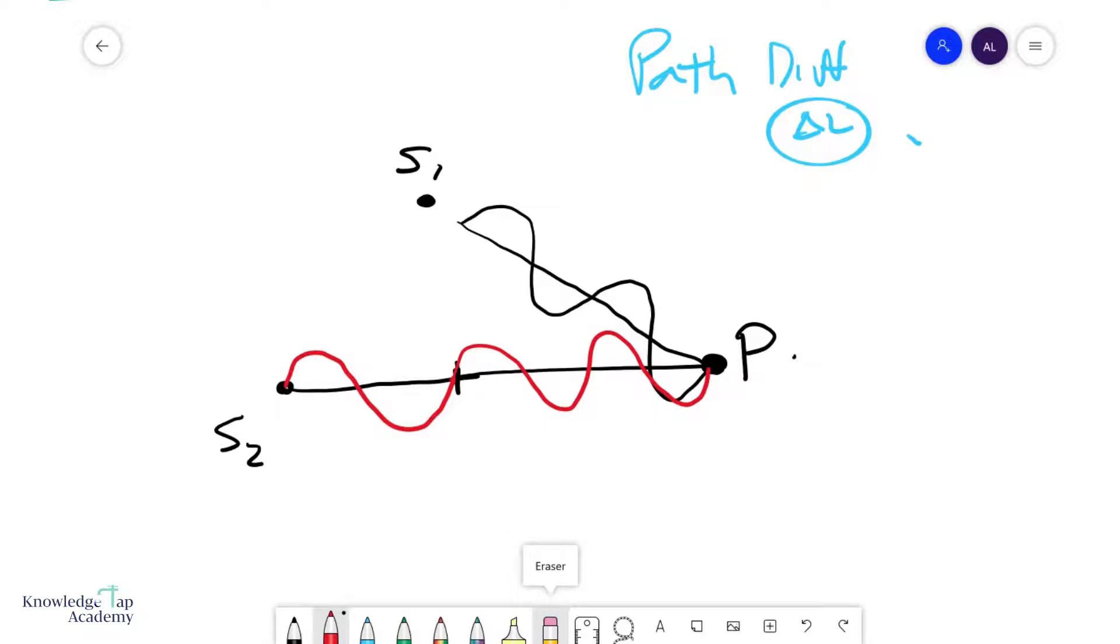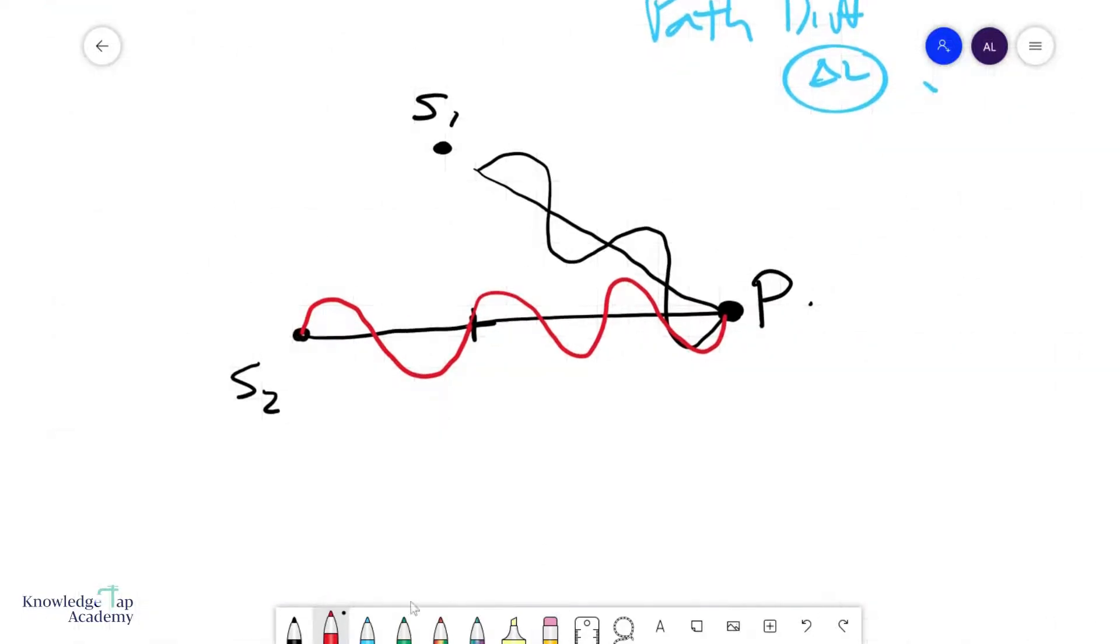Notice that every time I introduce a path difference equal to one wavelength, so I could just extend this even more, I'm basically introducing a phase difference of 2π, because I have another additional wave. And so things get interesting,